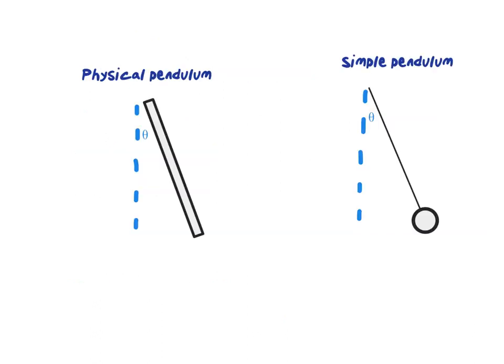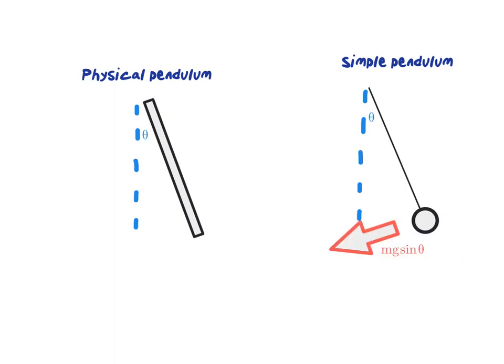The only difference between the torque and the force diagram is that the torque diagram takes into account where the force is applied from the axis of rotation. So if we draw the torque diagram for the simple pendulum we know we have mg pointing straight down. We eliminate that to show the only restoring force we're looking at is the component mg sine theta, and that will be exactly the same for the physical pendulum.